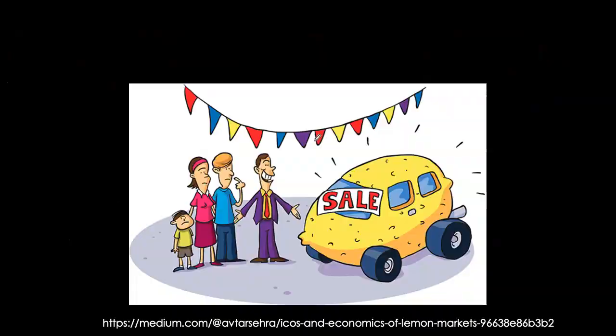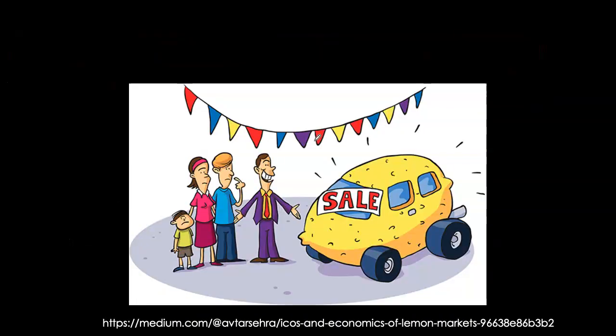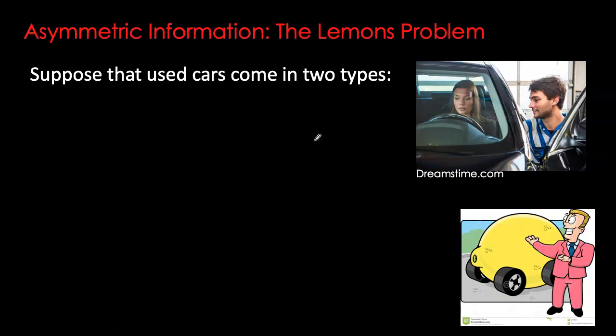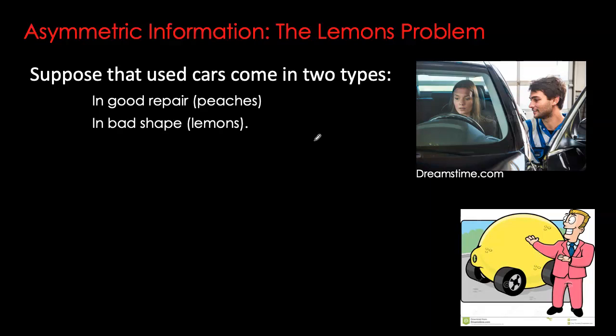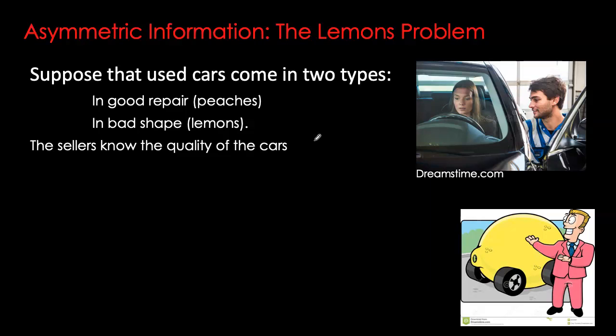Because of this information gap, people who are more likely to create adverse outcomes are the ones more aggressively pursuing loans. To understand how that comes about, let's go back to Akerlof's example of a used car market. In a used car market, the seller promotes the car as the best possible deal, but as a buyer you don't have the same information as the seller. Akerlof identified two types of cars: a car in good quality — still used but good — referred to as a 'peach,' and cars of bad quality, referred to as 'lemons.' The seller knows which is which; it's the buyer who does not.